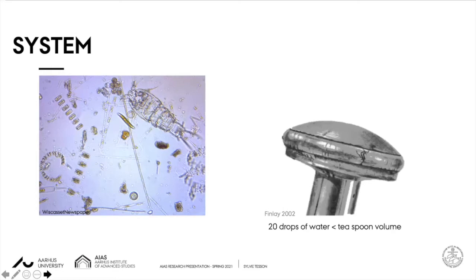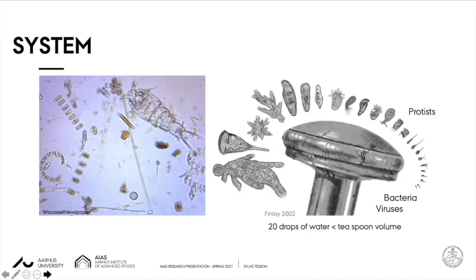one milliliter of seawater, which contains about 20 droplets of water, or a quarter of a teaspoon in volume, and we place a pinhead for scaling the organisms, then in this volume we will have about 10 million viruses, 1 million bacteria, a thousand protists, and a few metazoans. Among the protists are the microalgae.